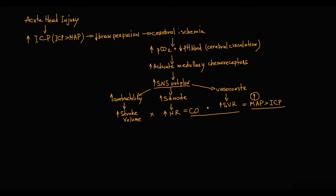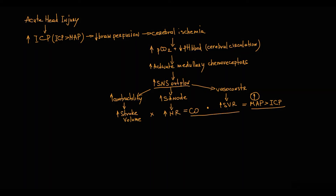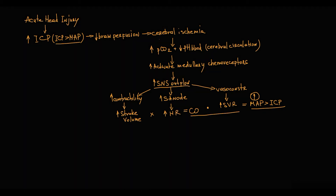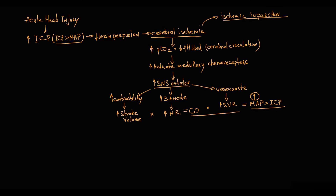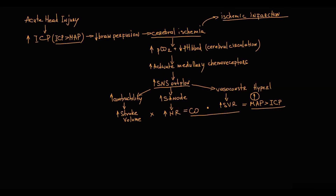Blood pressure will continue to rise until mean arterial pressure is higher than intracranial pressure, because only then will blood flow to the brain be restored. If mean arterial pressure remains lower than intracranial pressure, prolonged brain ischemia will eventually result in ischemic infarction. So initially, the Cushing reflex is characterized by hypotension and tachycardia.